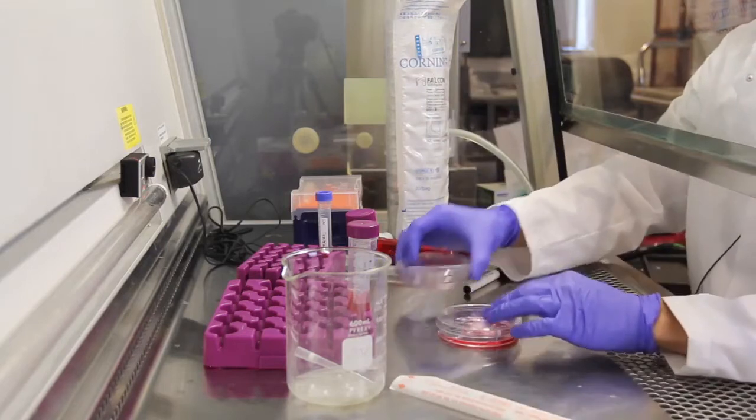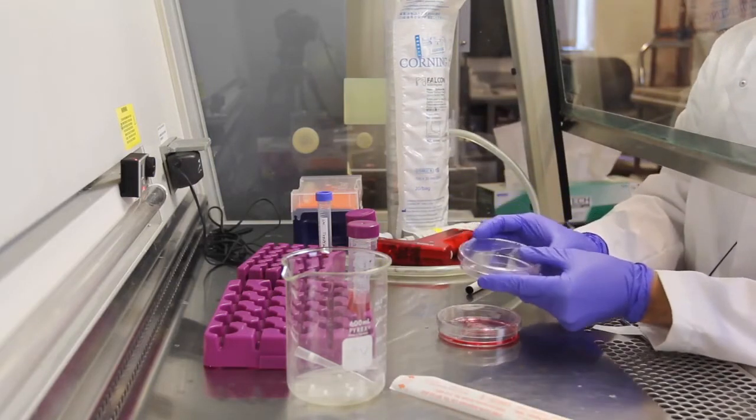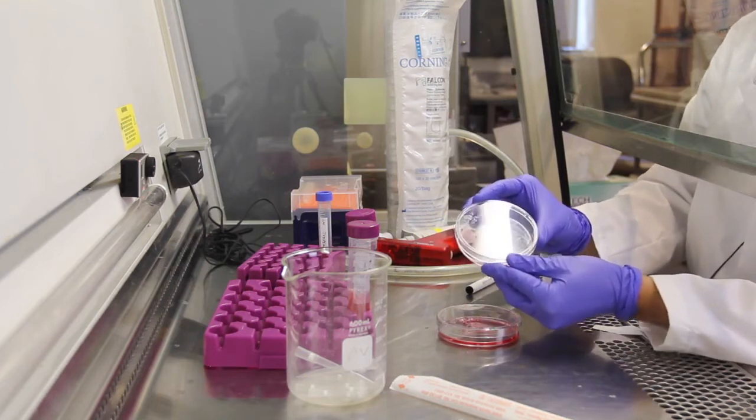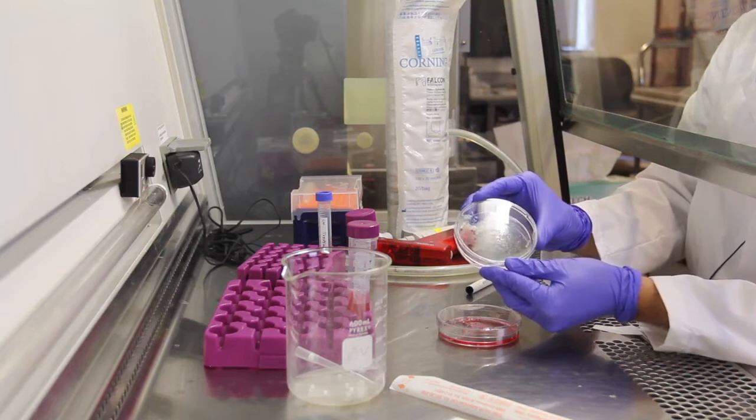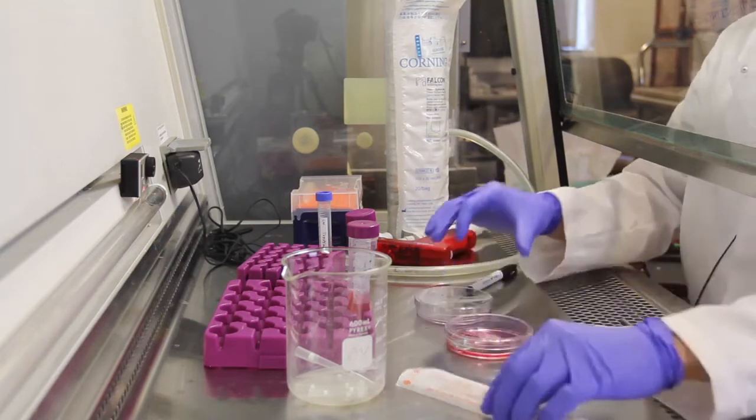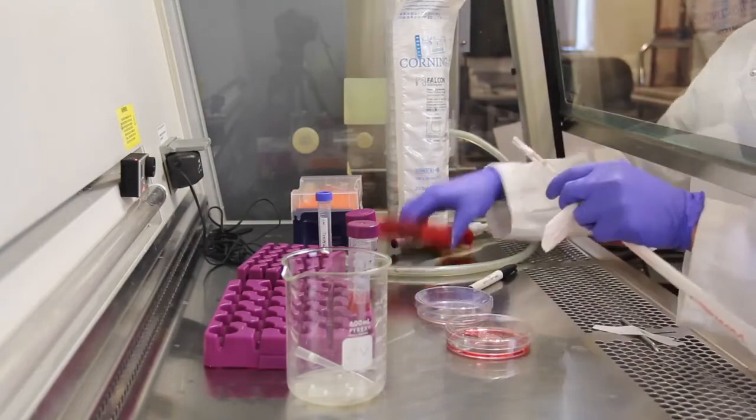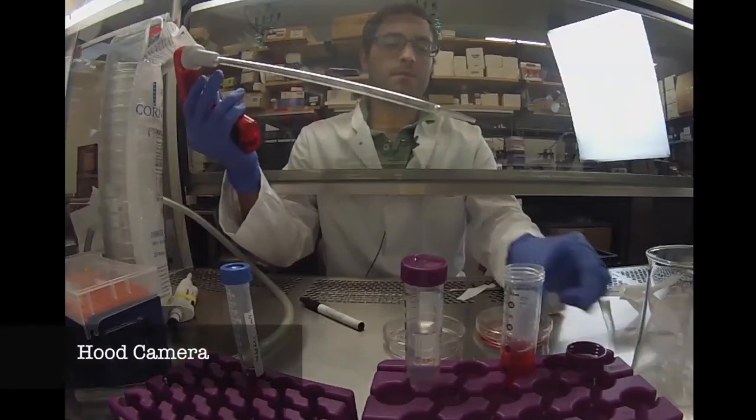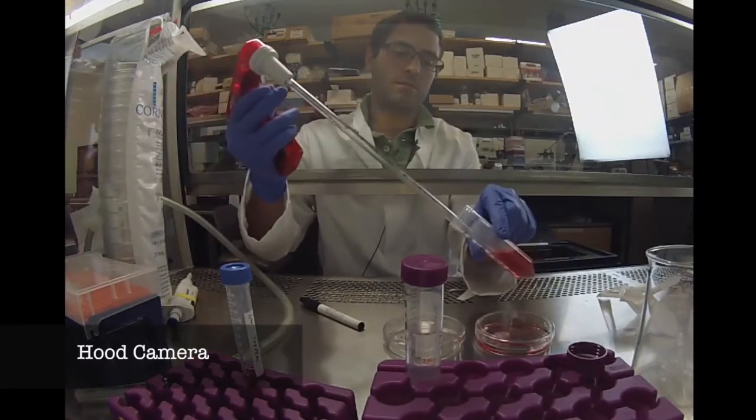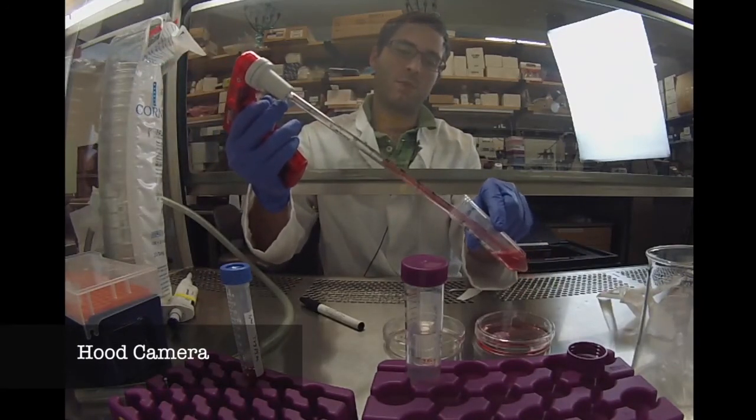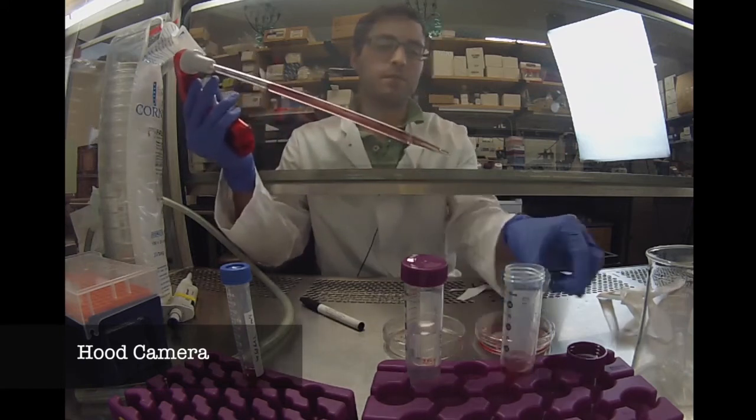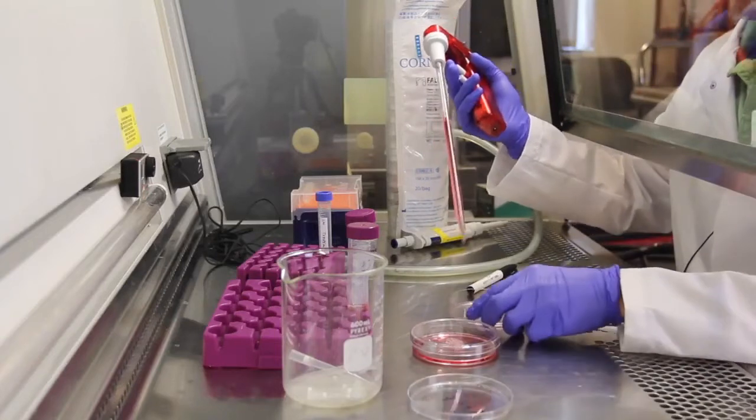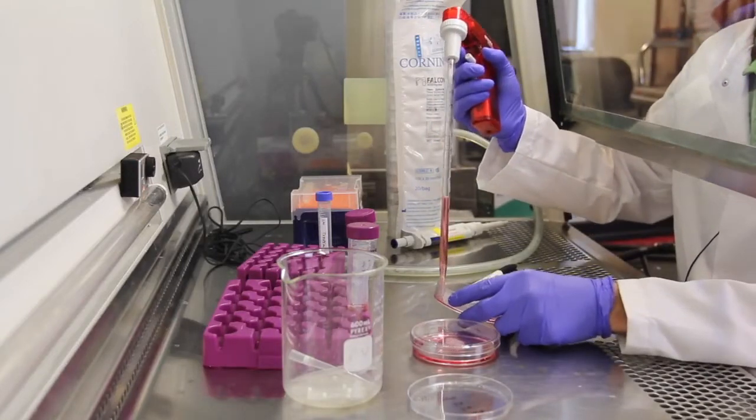And at this point the trypsin will have done what it needs to do. One way to test for that is to gently tap the side of the plate and you can start to see the cells sliding down toward the bottom. To get them back to their original concentration, I take 9 more milliliters of growth medium and pipette that onto the plate.